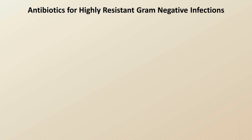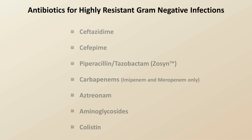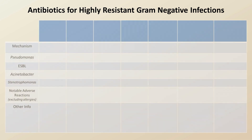Antibiotics to consider when treating one of these highly resistant gram-negative infections include the 3rd generation cephalosporin ceftazidime, cefepime, piperacillin-tazobactam, carbapenems excluding ertapenem, aztreonam, aminoglycosides, and colistin. Let's take a look at these in some more detail.